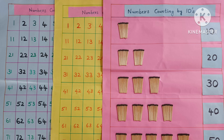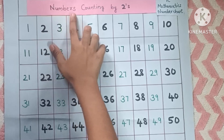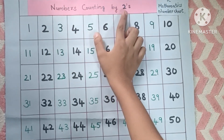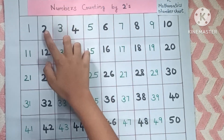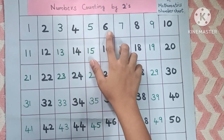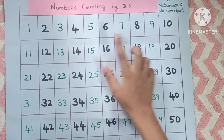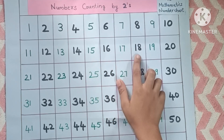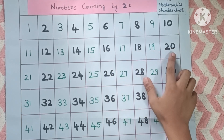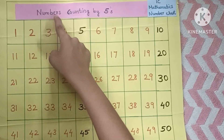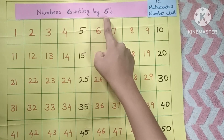These are number charts. Numbers counting by twos: 2, 4, 6, 8, 10, 12, 14, 16, 18, 20, and so on.